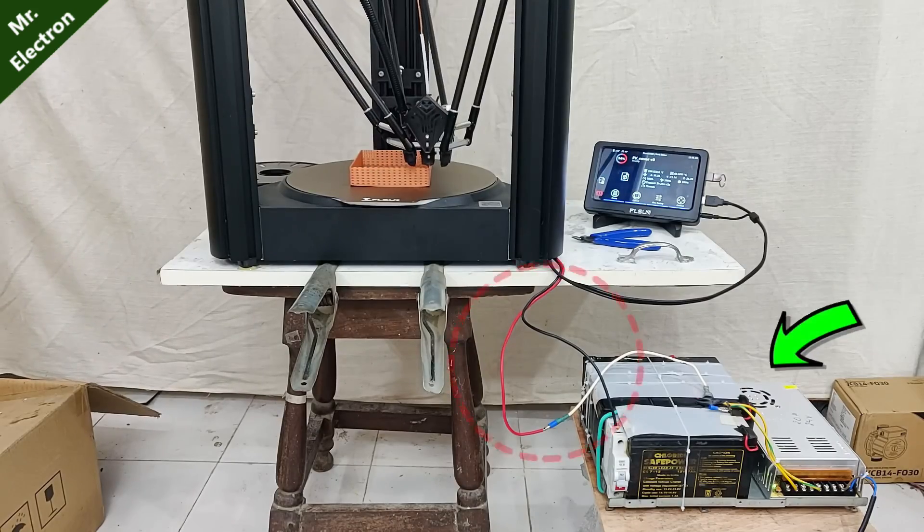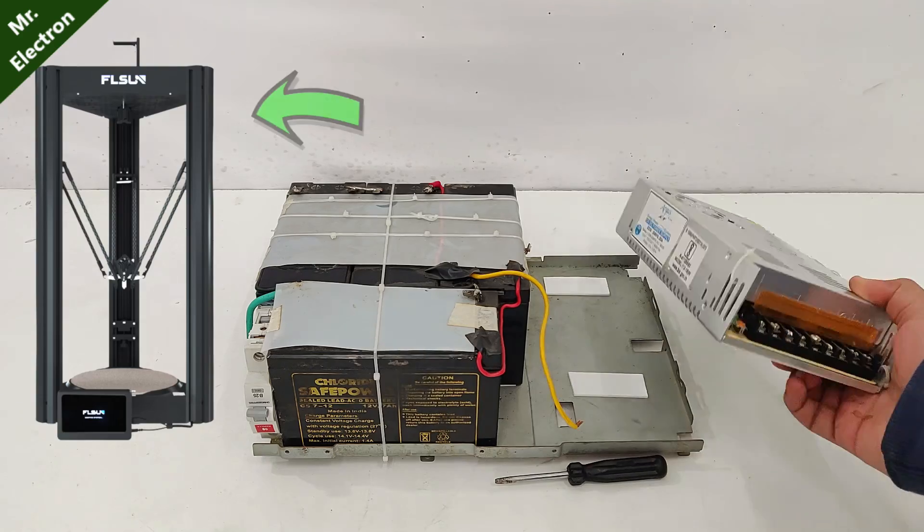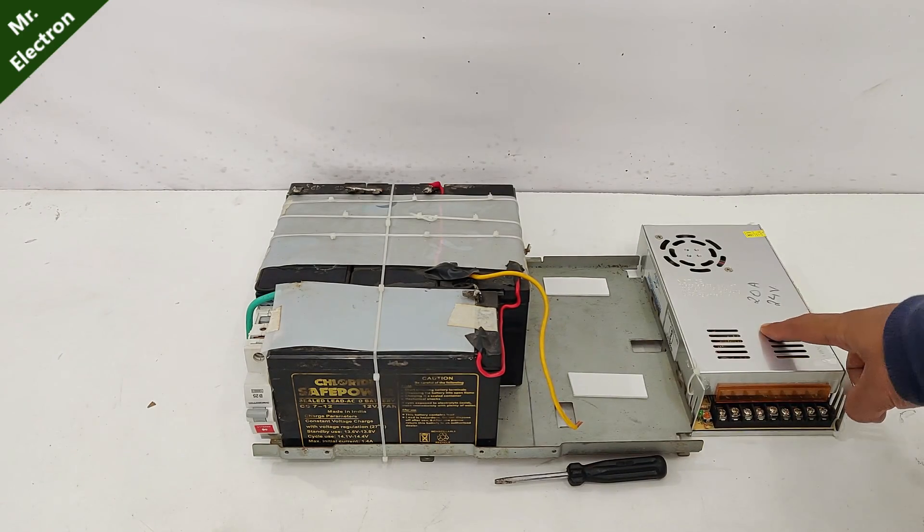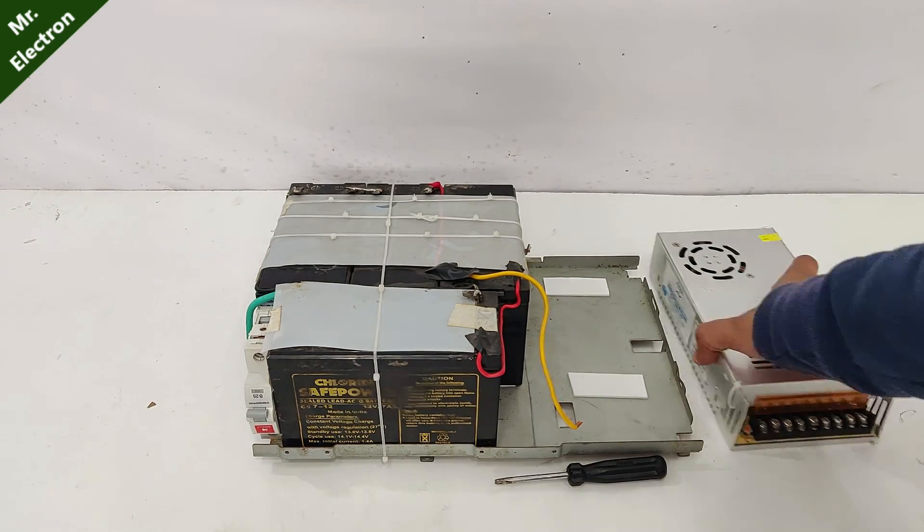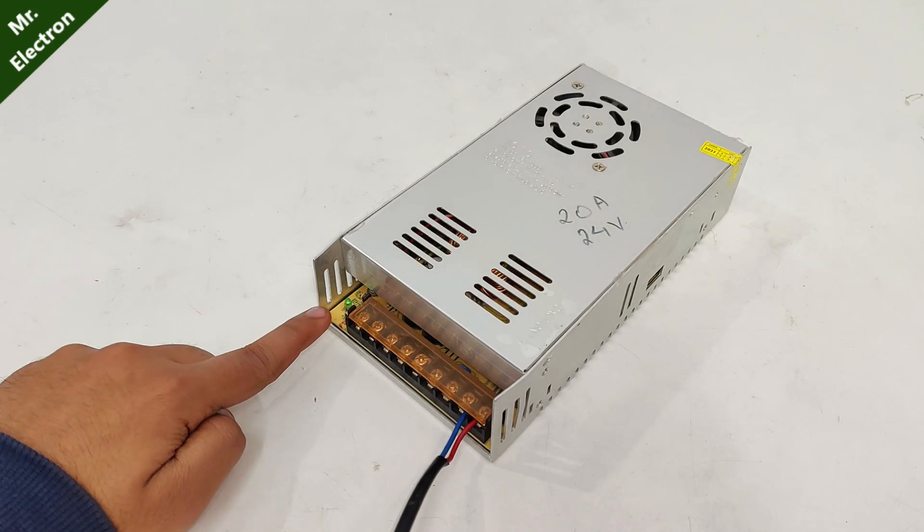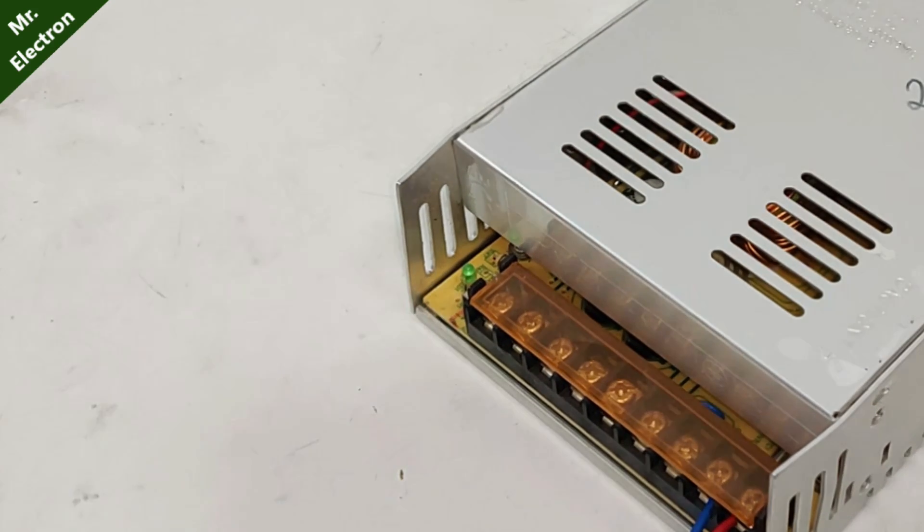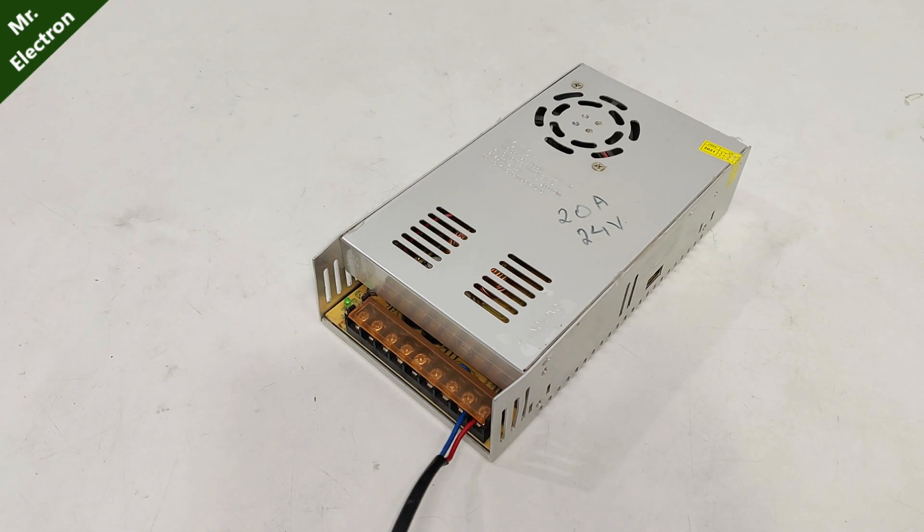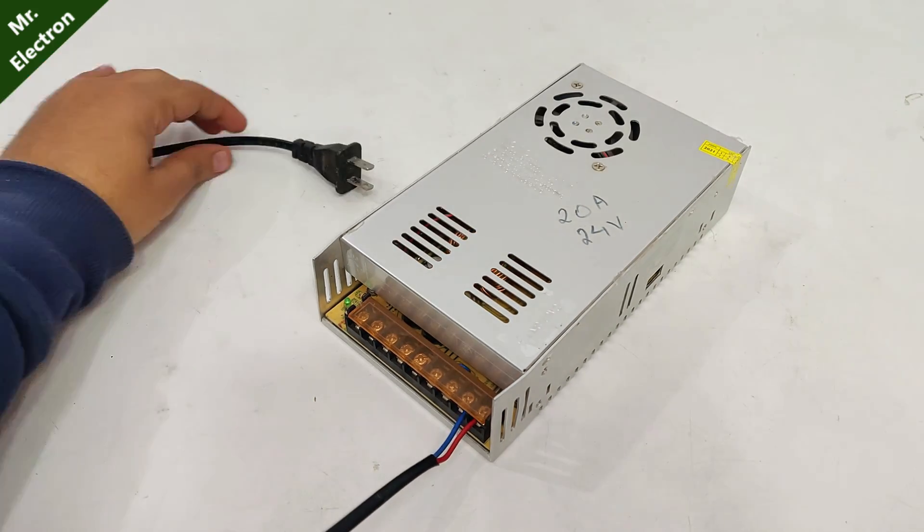Now in one of my previous videos I made this 24 volts 20 amperes backup power supply for my 3D printer, but this power supply got damaged so I'm going to replace it with our new one. So checking our old power supply, this is green indicator light, turning it on. It's not glowing. Removing cable for safety.